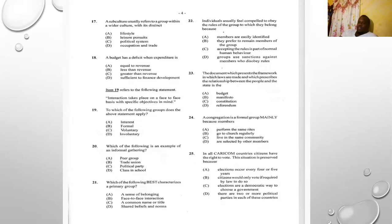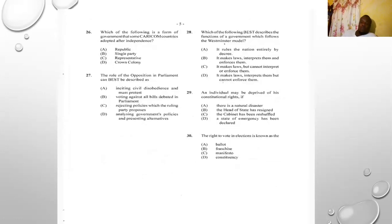Number twenty-five: in all CARICOM countries citizens have the right to vote. This situation is preserved because A) elections occur every four or five years, B) citizens only vote if required by law, C) elections are a democratic way to choose a government, D) there are two or more political parties. The answer is C — elections are a democratic way to choose a government. Democracy is government by the people, so the people can put in and take down the government.